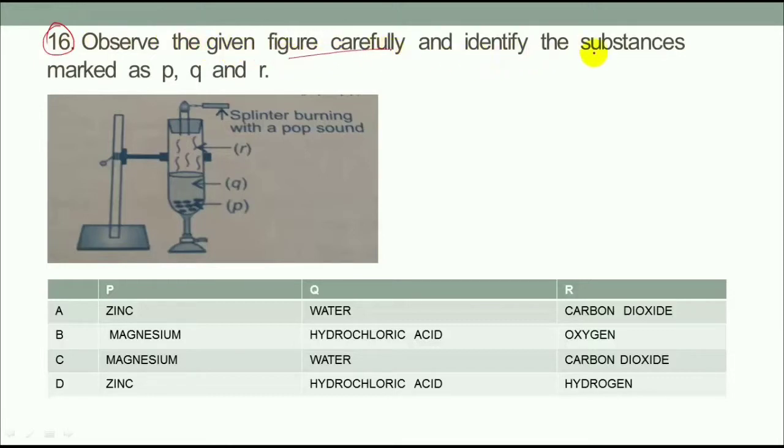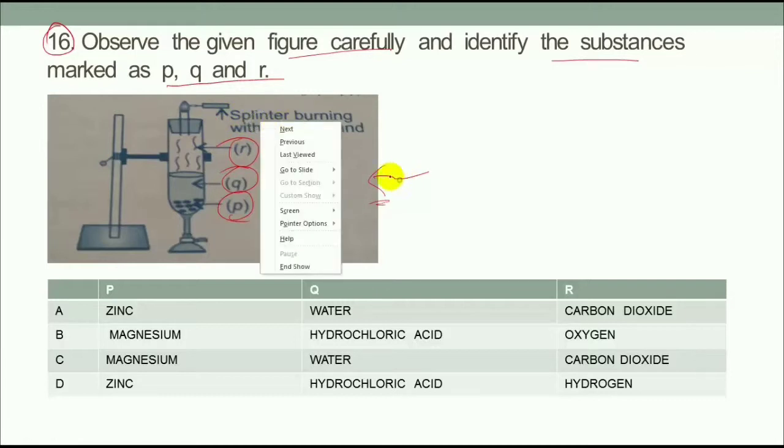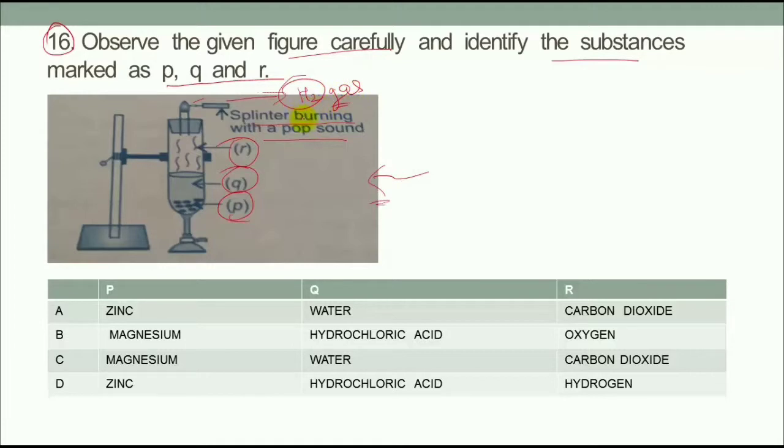Observe the given figure carefully and identify the substances marked as P, Q, R. This is a splinter burning with a pop sound. When we bring a splinter over here, this is like fire. So we bring a pop sound. Then we claim it to H2 gas, right? H2 gas burns with a pop sound.